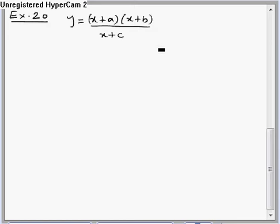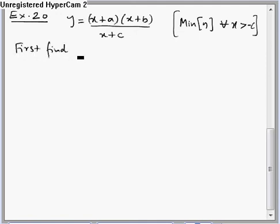We are supposed to find minimum value of this expression only for x greater than minus a, minimum of y for all x greater than minus a. But first we will find the values y can take for all x belongs to R.